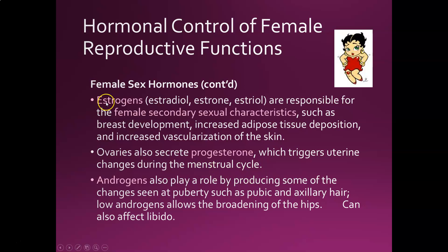There are three types of estrogens: estradiol, estrone, and estriol. The main one responsible for the female cycle in women of reproductive age is estradiol. Estriol is produced only during pregnancy, and estrone persists even after menopause. Estrogen production gives females their secondary sexual characteristics: breast development, increased adipose tissue deposition giving the body a softer, curvier look, and increased vascularization of the skin.